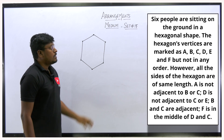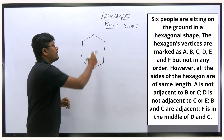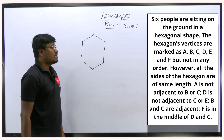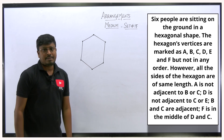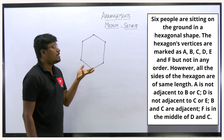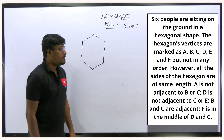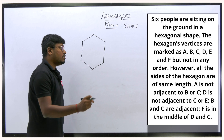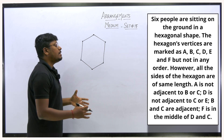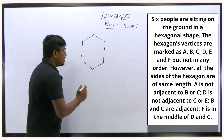Now the conditions: all six sides of a hexagon are the same length. First point — A is not adjacent to B or C, meaning A is not an immediate neighbor of B or C. Similarly, D is not adjacent to C or E. B and C are adjacent. The last point — F is in the middle of D and C.